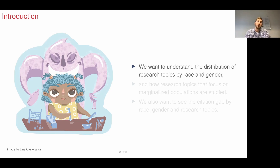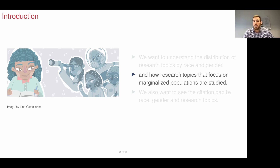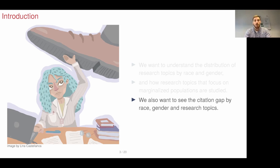Our idea is to understand the distribution of research topics by race and gender, and to understand how research topics focused on marginalized populations — those aimed at improving the living conditions of marginalized populations — are being studied in science. We also want to understand how the citation gap occurs and distributes along race, gender, and research topics.